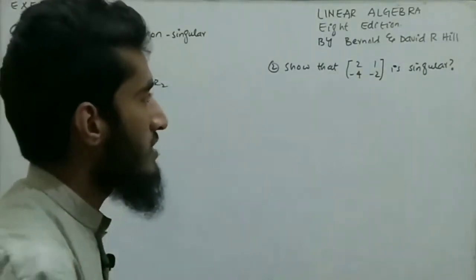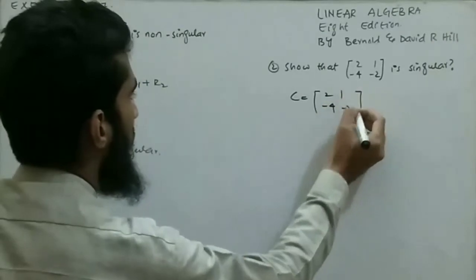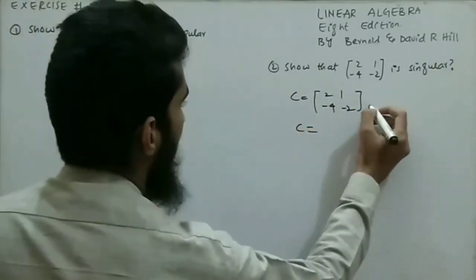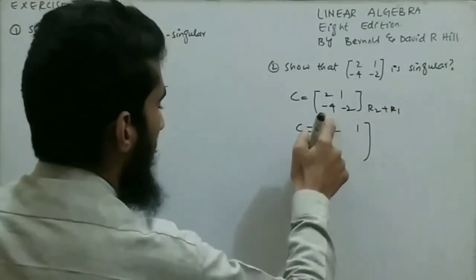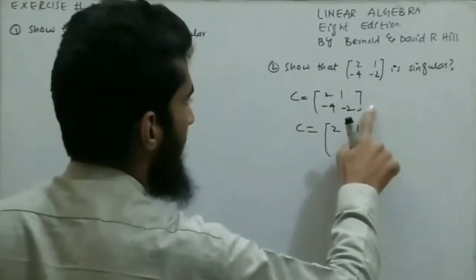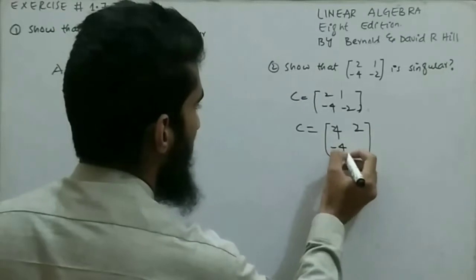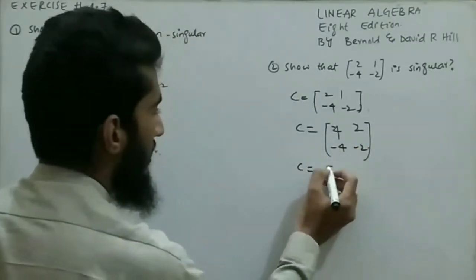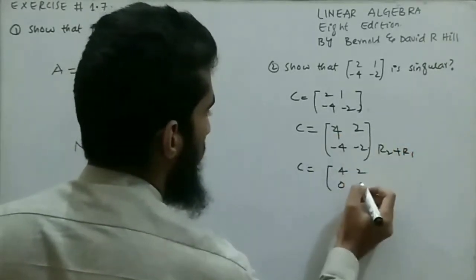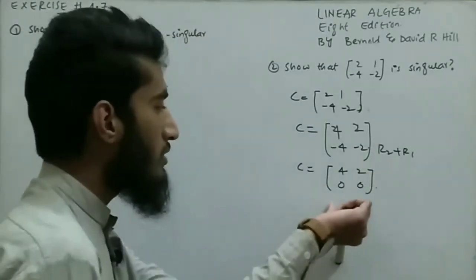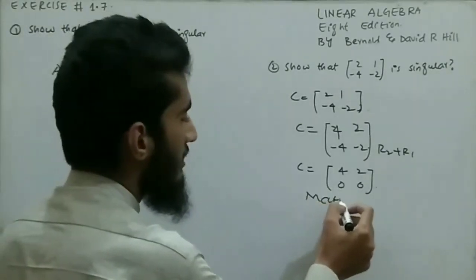The second question is: show that matrix C = [2, 1; -4, -2] is singular. I add R2 + R1, but first multiply the first row by 2, giving [4, 2]. Now applying the operation: -4 + 4 = 0 and -2 + 2 = 0. Since the row is entirely zero, according to the properties of matrices, this matrix is singular.